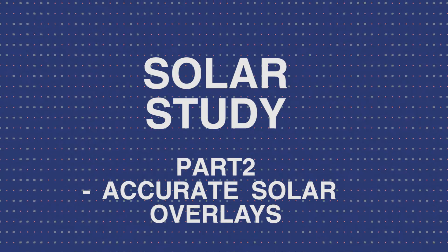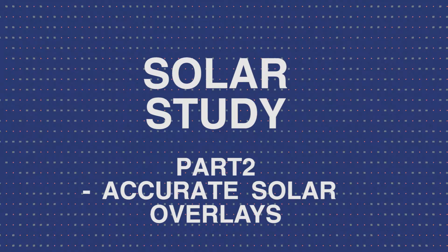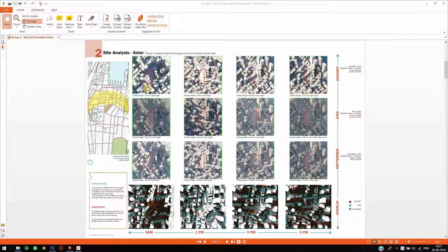Hi everybody, welcome to today's tutorial. We are at Part 2 of the solar study series. In Part 1, we looked at how we can create the solar matrix you see here — solar studies for different times of the year and different months: January, June, and September, at times 9, 1, 3, and 5. So if you want to know the solar shadows at 3pm for September, you follow this and get this. We learned how to create this in Part 1, so have a look at that and come back to this video to follow along.